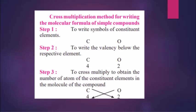We know how to find the valency of any element. Now, if we need to find the molecular formula of simple compounds, there are five steps using the cross multiplication method. The first step is to write the symbol of the constituent elements. For example, if we take carbon and oxygen, we write C and O.